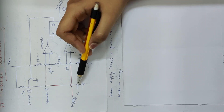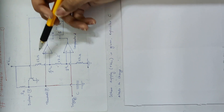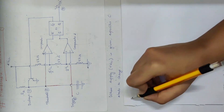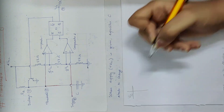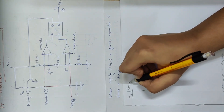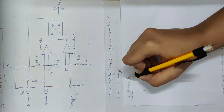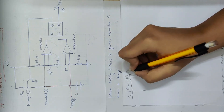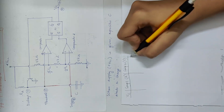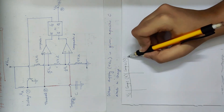The capacitor voltage increases. The comparator output is high, R is high, comparator 2 is high, S is high.